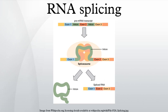In molecular biology and genetics, splicing is a modification of the nascent pre-messenger RNA transcript in which introns are removed and exons are joined. For nuclear-encoded genes, splicing takes place within the nucleus after or concurrently with transcription. Splicing is needed for the typical eukaryotic messenger RNA before it can be used to produce a correct protein through translation. For many eukaryotic introns, splicing is done in a series of reactions catalyzed by the spliceosome, a complex of small nuclear ribonucleoproteins, but there are also self-splicing introns.